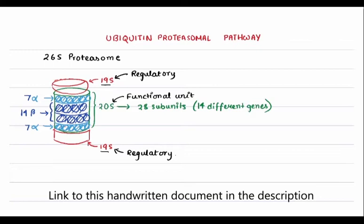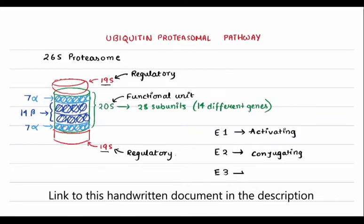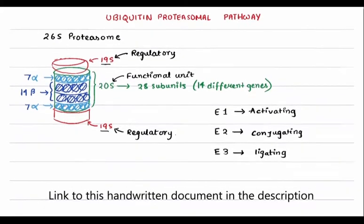Before going on to the process, we have three different proteins which help in getting the ubiquitin-ligated protein into the proteasome. These are E1, E2, and E3. E1 is basically an activating protein, E2 is a conjugating protein, and E3 is a ligating protein. We're going to elaborate on that when we look at the process.